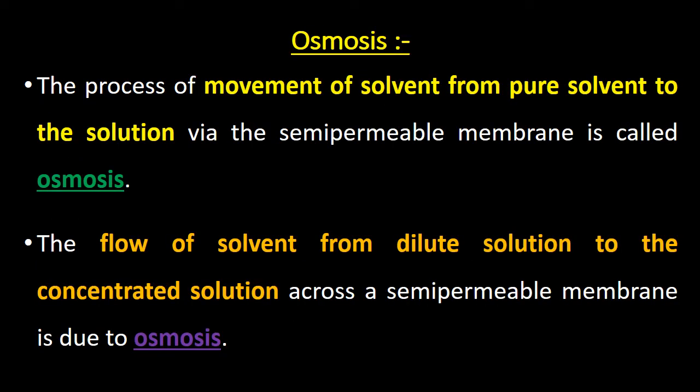Let us know what you mean by osmosis. Osmosis is a process of movement of solvent from pure solvent to the solution through a semipermeable membrane. The flow of solvent from a dilute solution to a concentrated solution across a semipermeable membrane is due to a process known as osmosis.